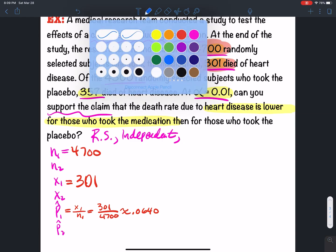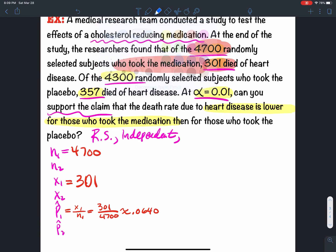For the other one, the placebo, 4,300 took the placebo, and 357 died.